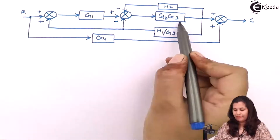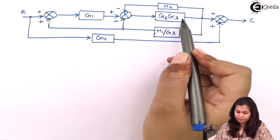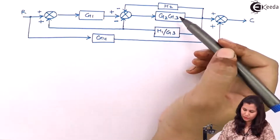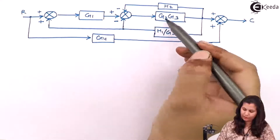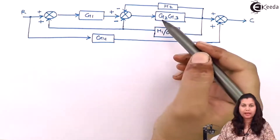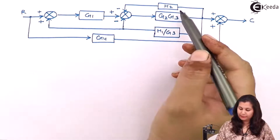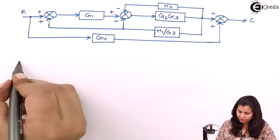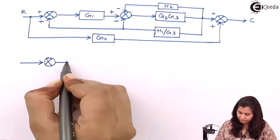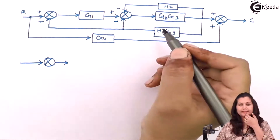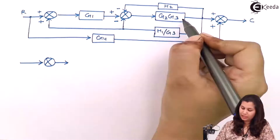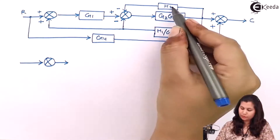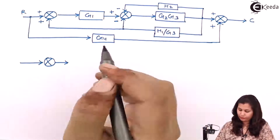We have multiplied and this has become G2·G3. Now you can see that these two blocks G2·G3 and H2 are forming a feedback loop, so we can apply the feedback rule here. When we apply the feedback rule, the resultant transfer function will be G2·G3 divided by 1 plus G2·G3·H2.